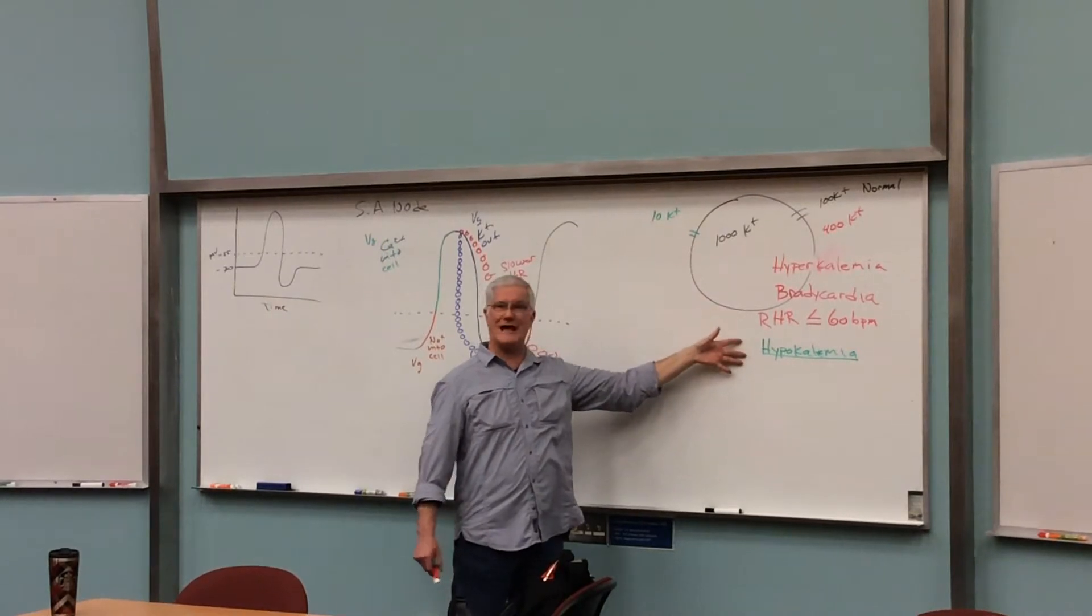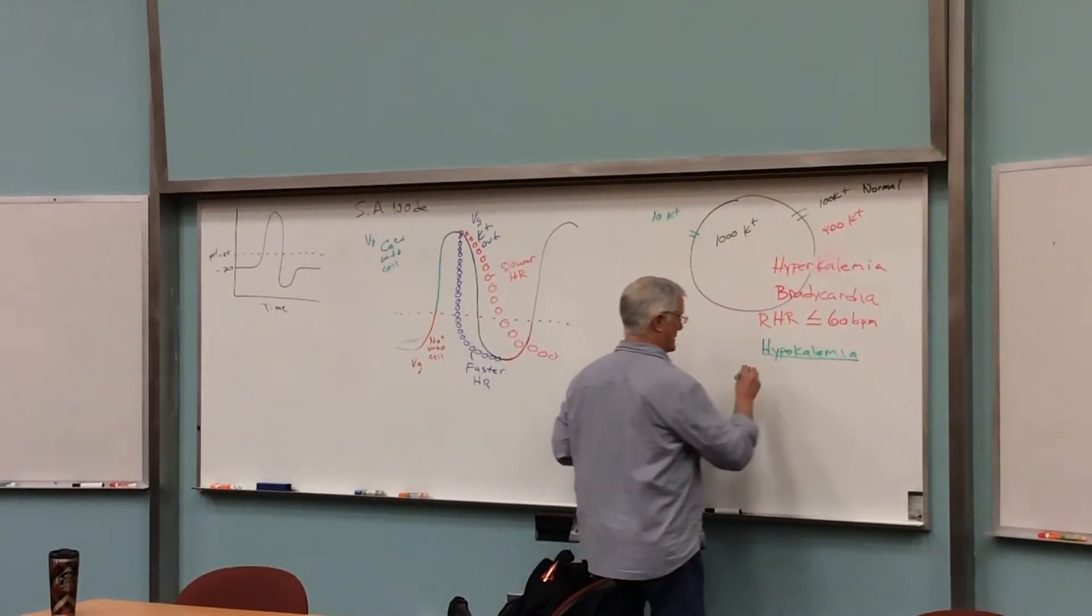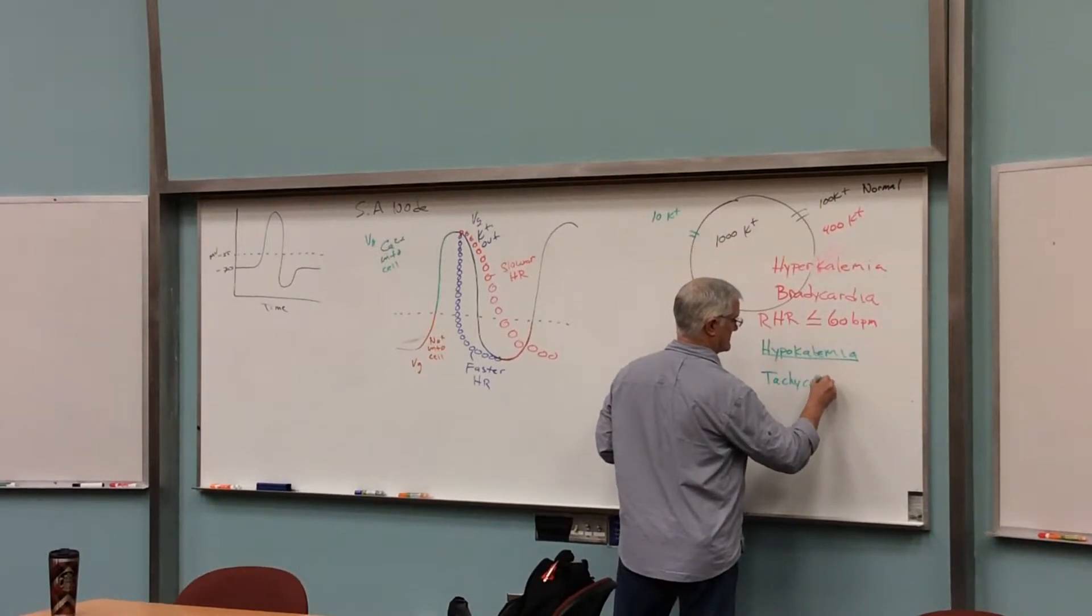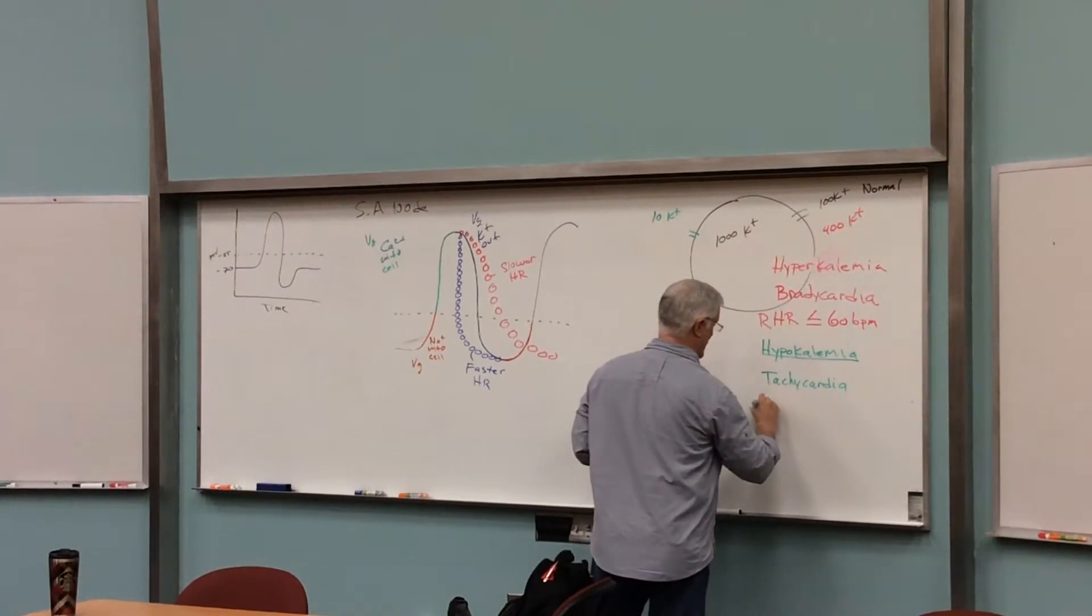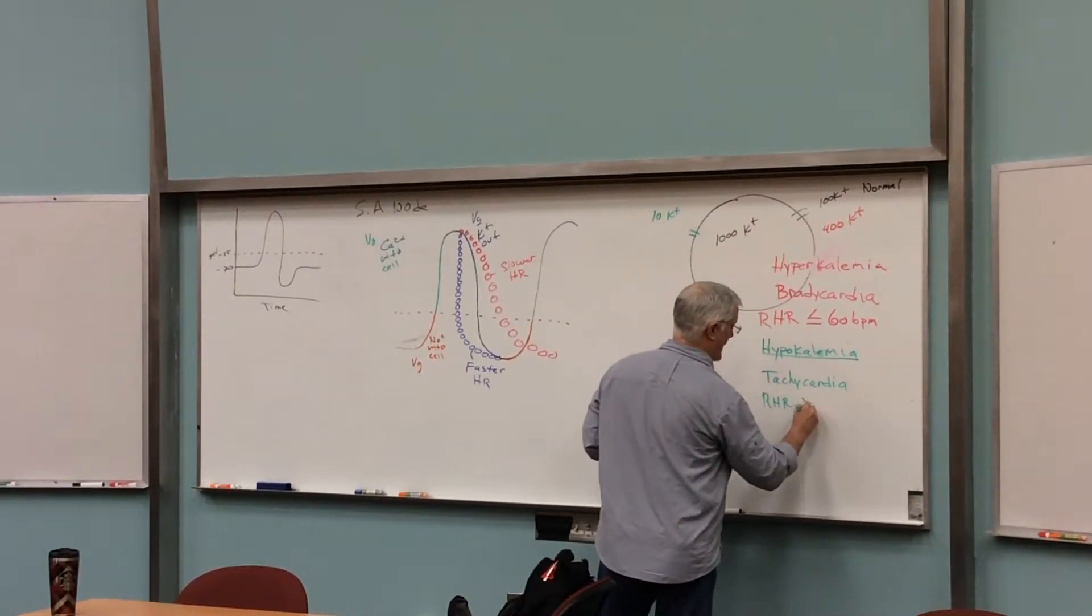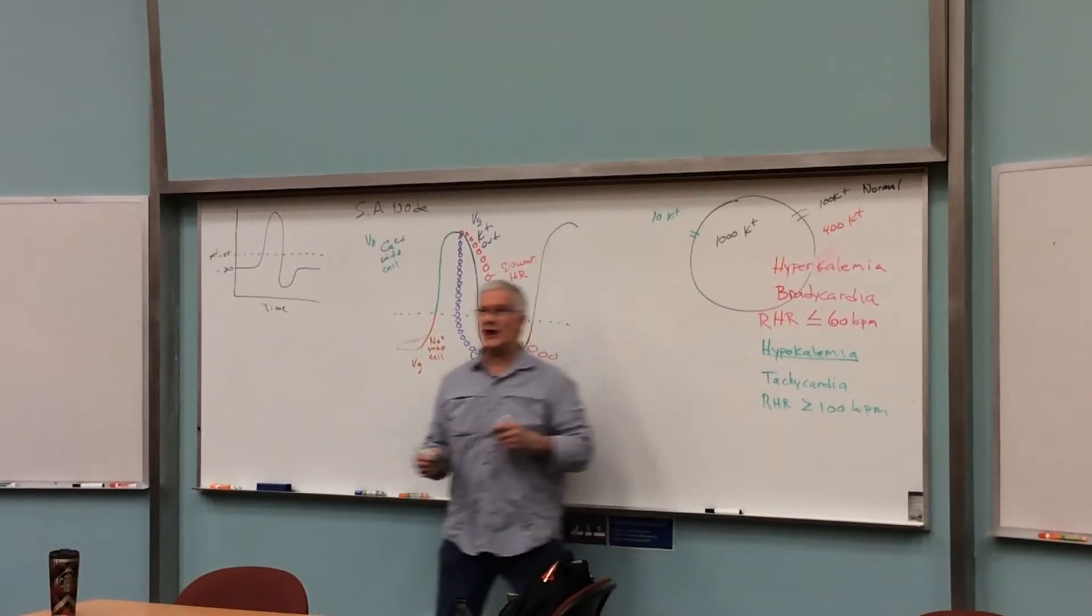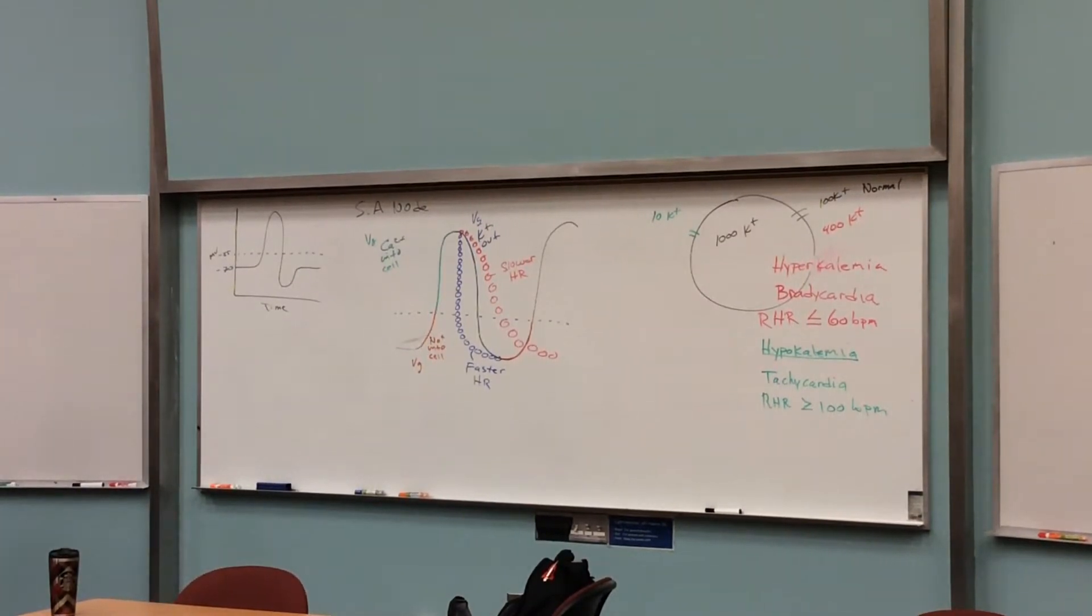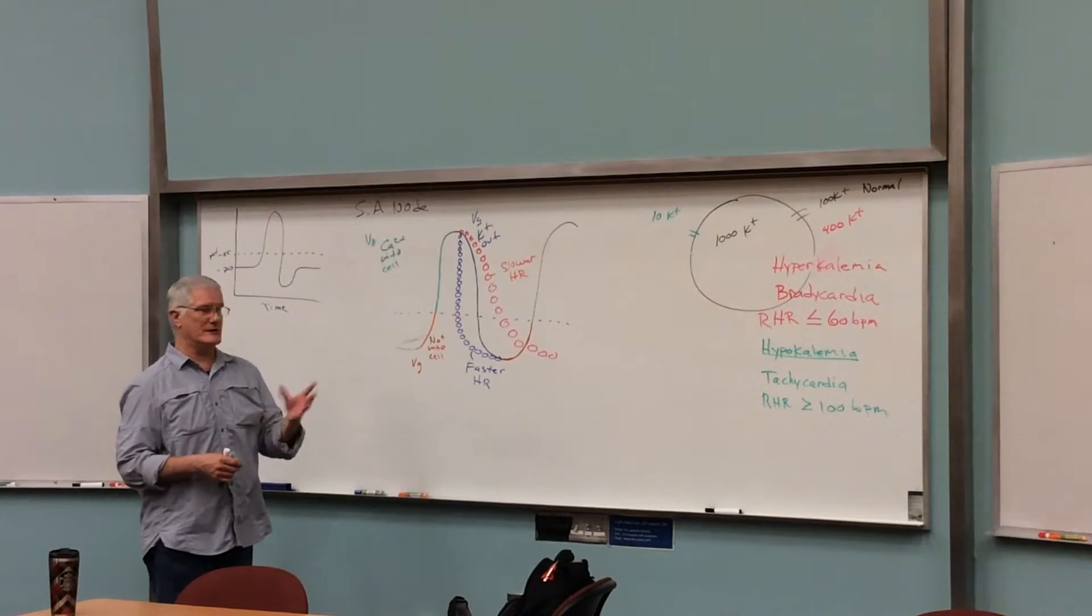Where you get hypokalemia, which is then an increase in heart rate. The term for that is tachycardia. Like bradycardia had a definition, this would be a resting heart rate greater than or equal to 100 beats per minute. Again, it's your resting heart rate, not your exercising heart rate. It has to be above 100. You can't have a normal resting heart rate of 100 and be considered to be tachycardia. That would be a larger number for you.